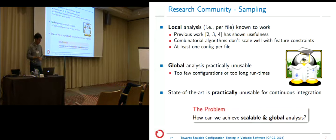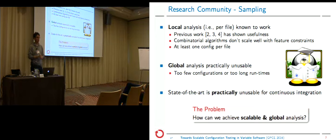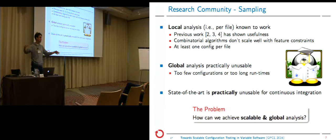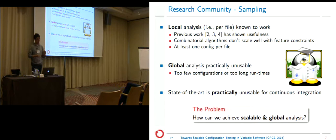Another problem is that local sampling generates at least one configuration per file. When N becomes large enough — say around 30,000 files for the Linux kernel — we have 30,000 different configurations, which we certainly cannot use for build testing given our limited budget. Then there's global analysis, where we look at the entirety of variability at once — for instance pairwise sampling on the feature model, concatenating all files and applying sampling on the big blob. The problem is that this either explodes due to exponential or quadratic problems, or generates too few configurations, or takes too long.